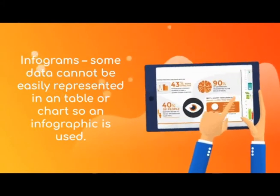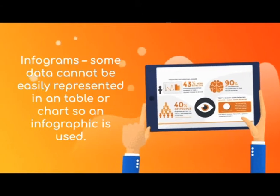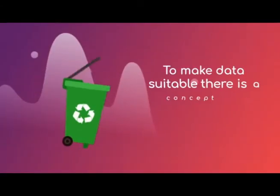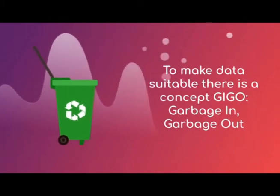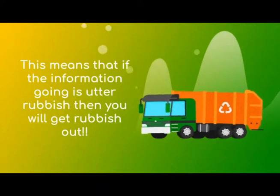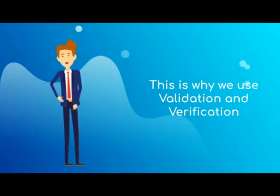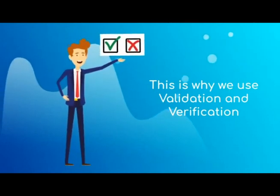Infographics are used for data which cannot be easily represented in tables or charts, so easy-to-read pictures are used to make data more accessible. We also have a concept called GIGO, which means garbage in, garbage out. The idea of GIGO is that if you put rubbish into a system, you will get rubbish out. Therefore, information needs to be accurate and good, which is why we use a process called validation and verification.